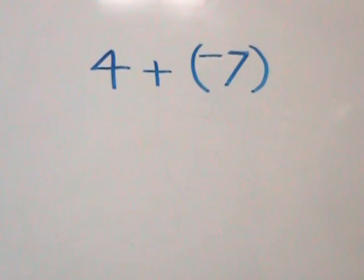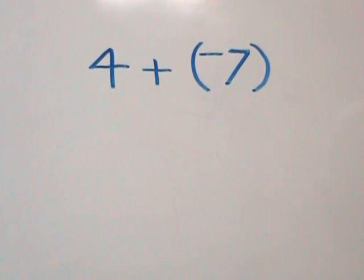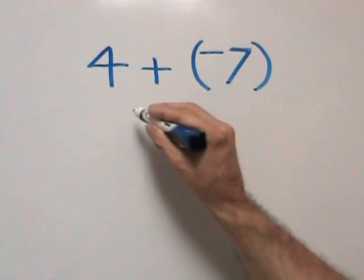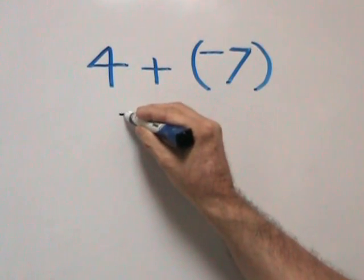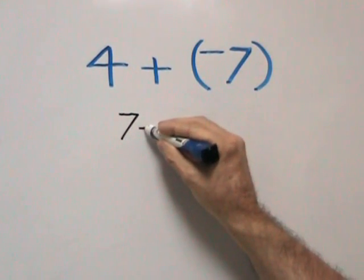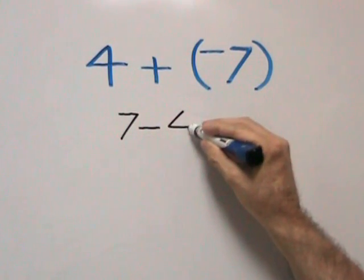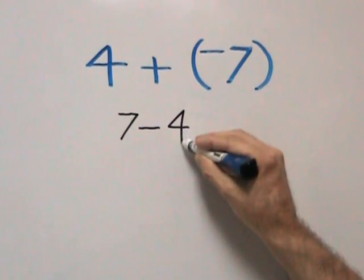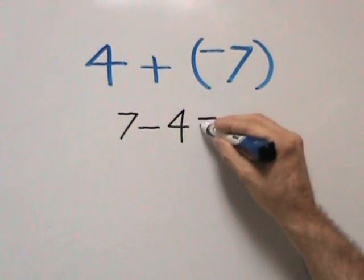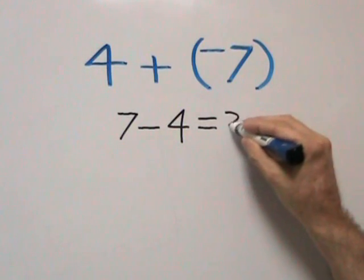When we're doing a problem like this, it's best to rewrite the problem using the integer rule of subtracting the smaller number from the larger number, and then keeping the sign of the larger number. So therefore, we're going to start with 7, which is our larger number. We're going to subtract 4, our smaller number. This gives us 3.